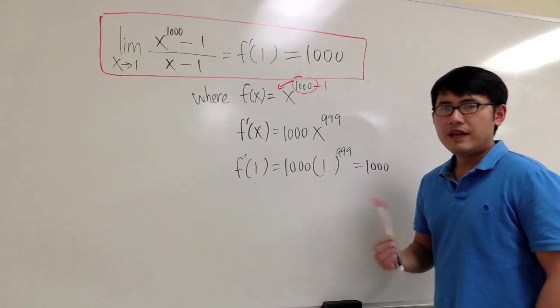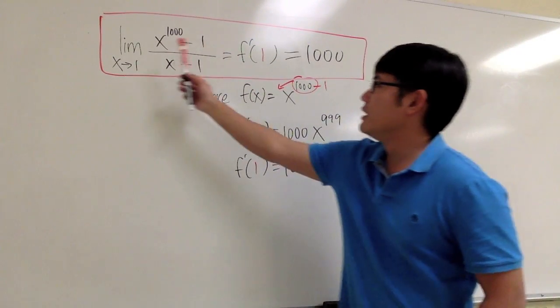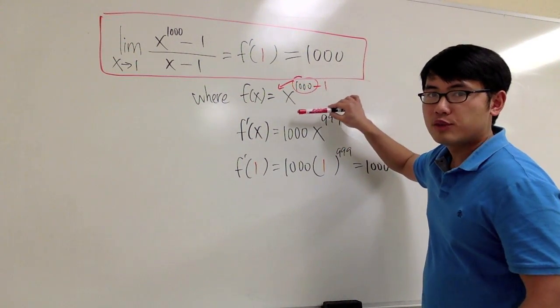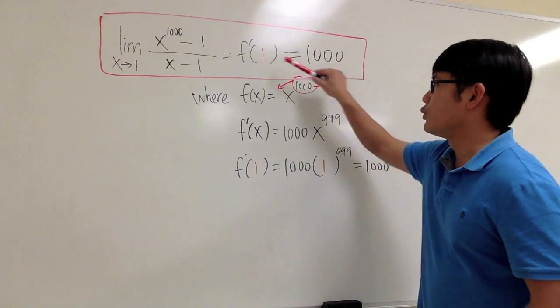Okay? Now let me take some time to convince you that this limit actually represents the derivative of x to the 1000 power, at x equals 1.